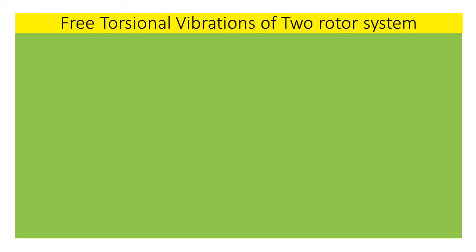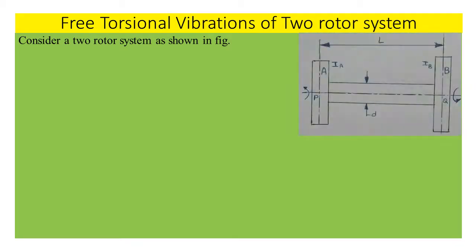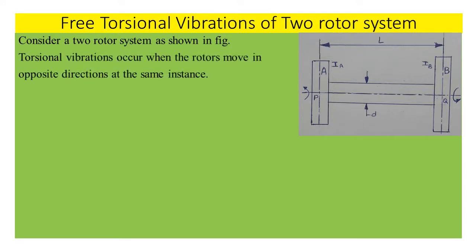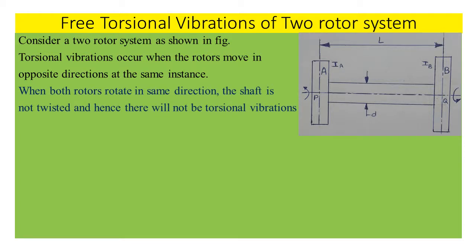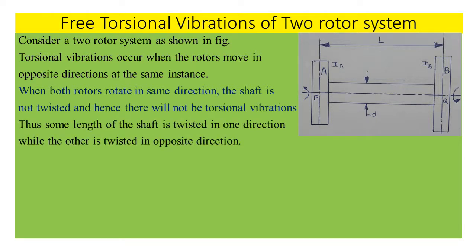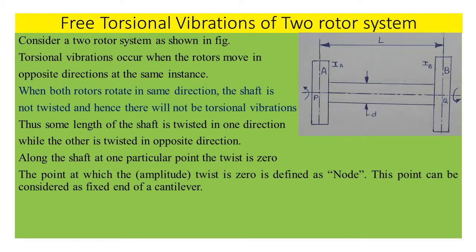Free torsional vibrations of a two-rotor system. Consider a two-rotor system as shown in the figure. The two rotors rotate in opposite directions. Torsional vibrations occur when the rotors move in opposite directions at the same instant. When both rotors rotate in the same direction, the shaft is not twisted and there will be no torsional vibrations. Thus, some length of the shaft is twisted in one direction while the other is twisted in the opposite direction, and along the shaft at one particular point the twist is zero.